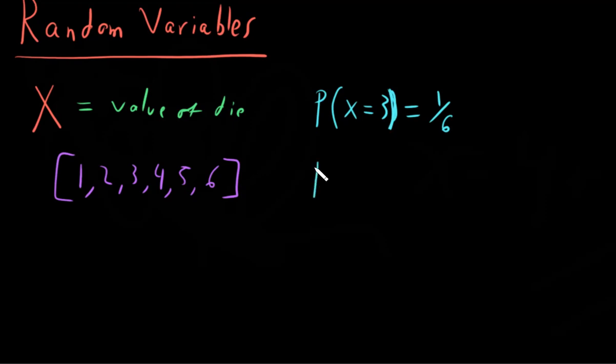So similarly, we can ask a different question. What's the probability that X is greater than four? Well, if we look at the possible options, what we're saying is what's the probability that it's five or six? Well, that's two out of six. And that's two over six, which is equal to one over three.